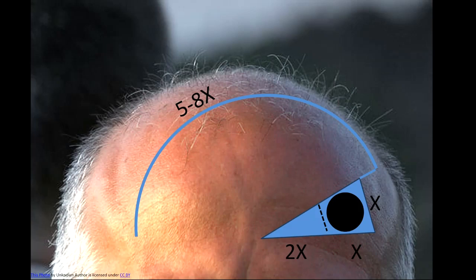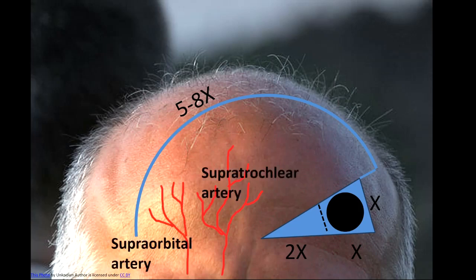Now this is essentially a random pattern flap but if you wanted to get more marks and exhibit some higher order thinking, you can mention that the blood supply of the base of the flap comes from the supratrochlear artery more centrally on the forehead and the supraorbital artery more laterally.